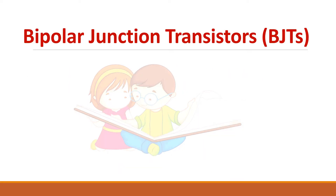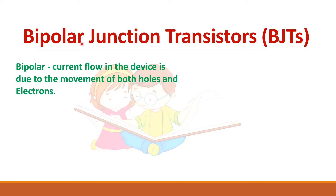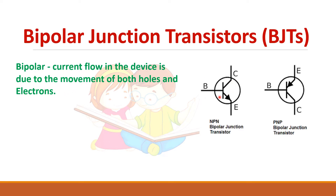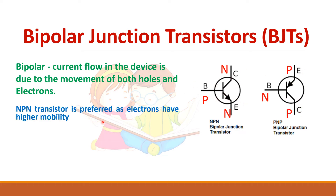The term bipolar indicates that current flow in the device is due to the movement of both holes and electrons. The same transistor symbol is used for power BJT — this is an NPN transistor and this is a PNP transistor. NPN is normally preferred because electrons have higher mobility, which helps in high current applications.